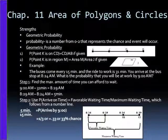My strength in this chapter was geometric probability. Probability alone is just a number from 0 to 2 that represents the chance that an event will occur. Now, geometric probability is slightly more in depth, but just as easy.